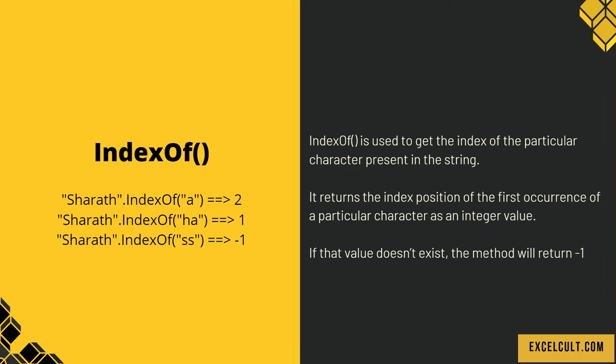In the examples, 'SHERATH'.indexOf('A') gives out 2. You might think it should be 3, but string indexing starts from 0. So S has index 0, H has index 1, and A has index 2. In the second example, we are trying to find the index of 'HA', and since HA starts from index 1, the answer is 1.